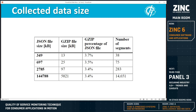Here we can see the table which shows JSON file size and GZIP file size. The third column shows the percentage of GZIP file size compared to JSON file size by number of segments. The data that needs to be transferred with compression is reduced to around 3.5% of the full JSON file size, no matter the road length or how many segments the road has.